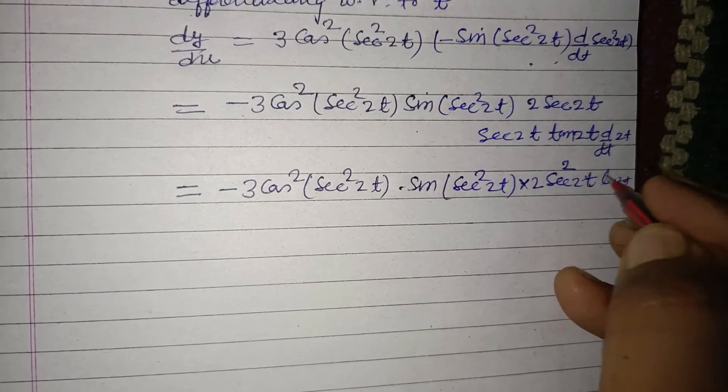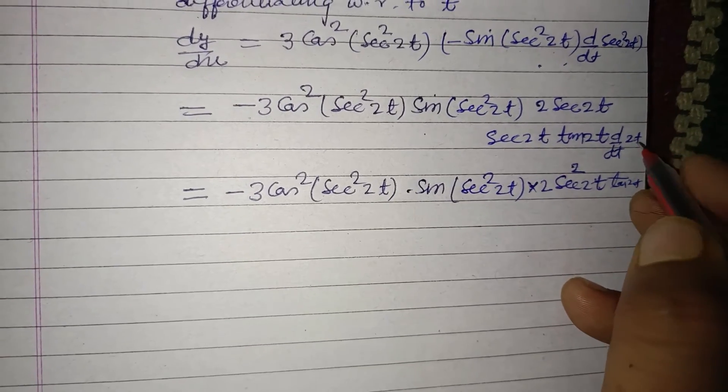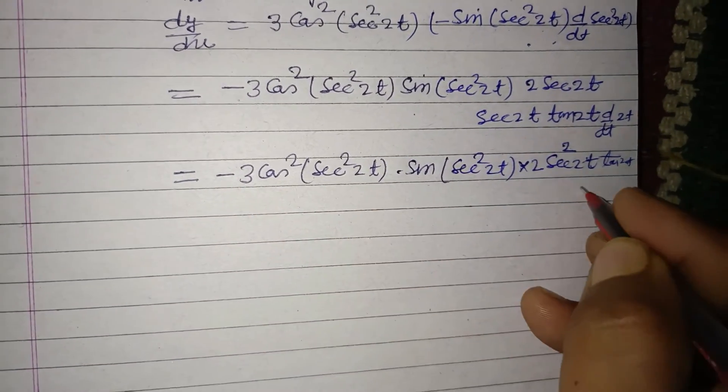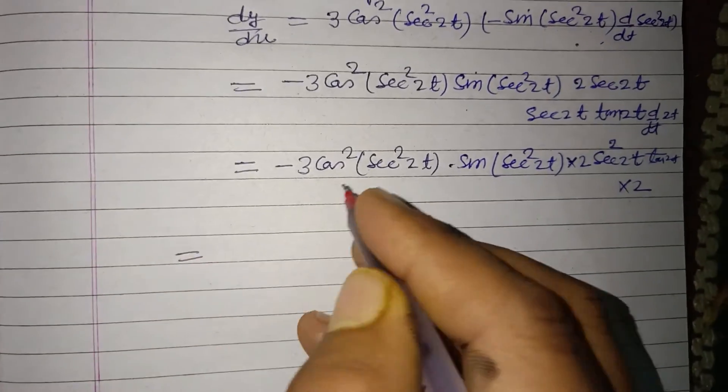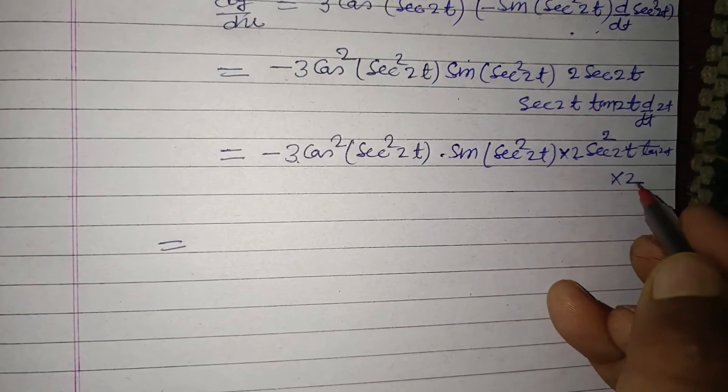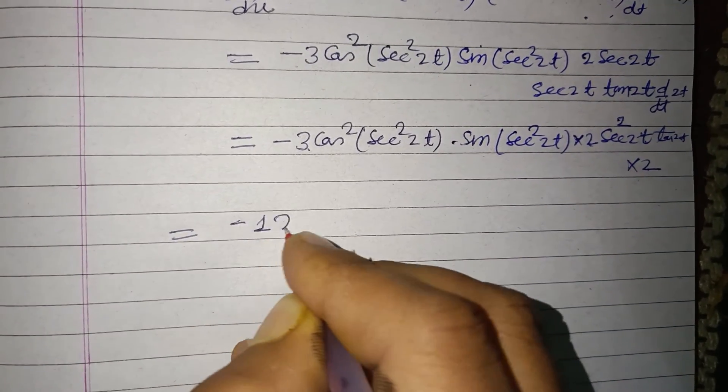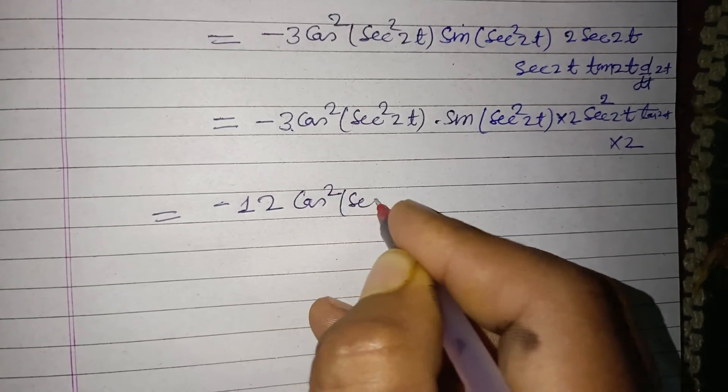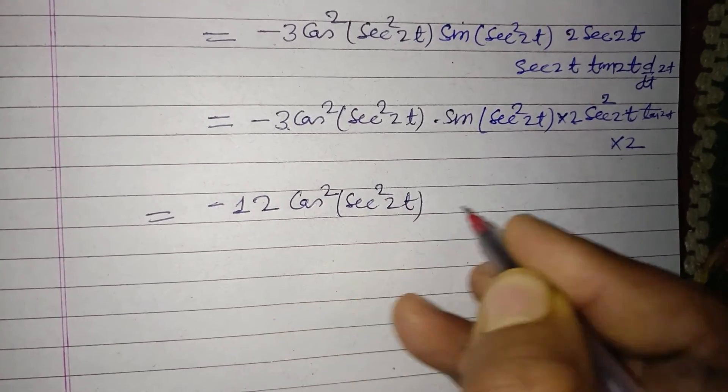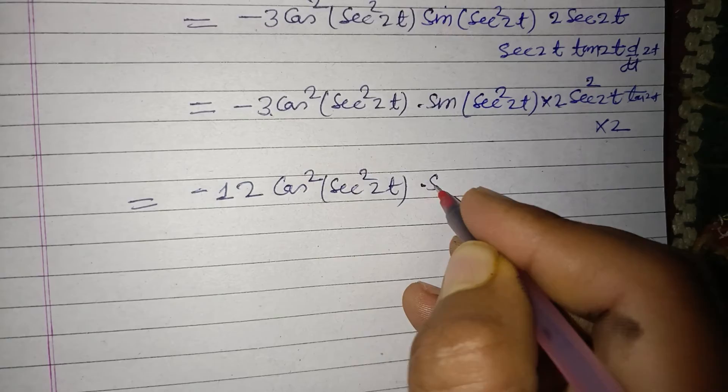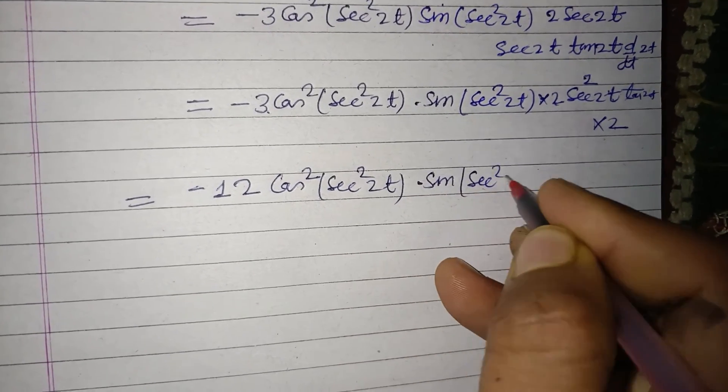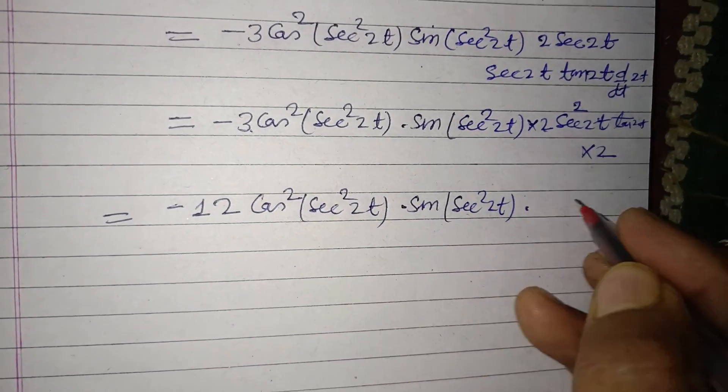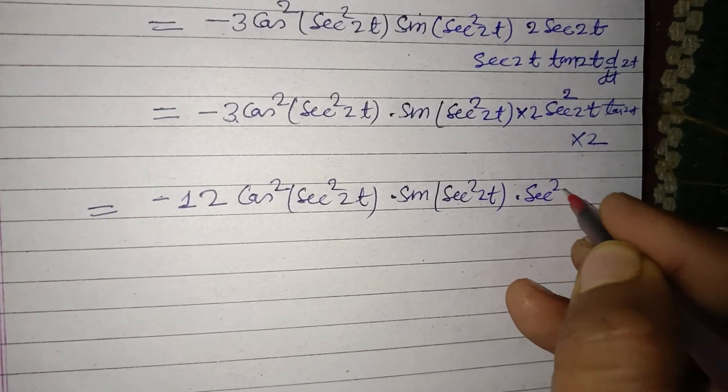And differentiation of 2t is 2. So finally, 3 times 2 is 6, 6 times 2 is 12. Minus 12 cos²(sec²(2t)) into sine(sec²(2t)) into sec²(2t).